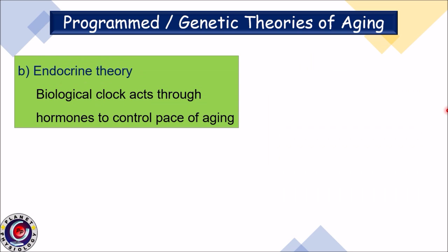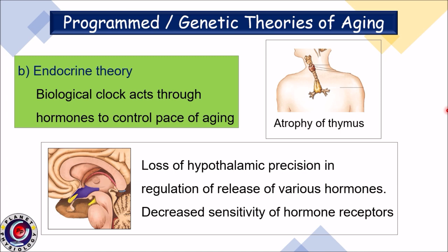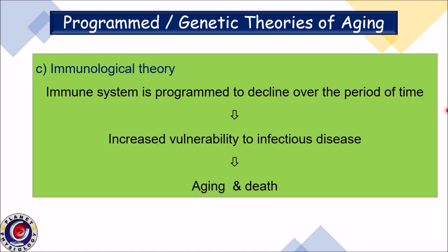The next genetic theory is the endocrine theory, which states that the biological clock acts through hormones to control the pace of aging. This may be due to loss of hypothalamic precision in regulating the release of various hormones and decreased sensitivity of hormone receptors, as well as atrophy of the thymus gland. The third theory is the immunological theory, which assumes that the immune system is programmed to decline over time, increasing the body's vulnerability to various infectious diseases, leading to aging and death.